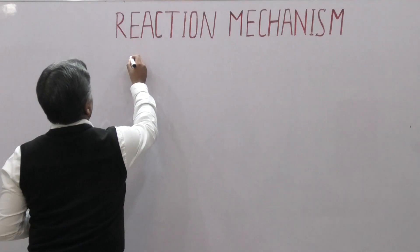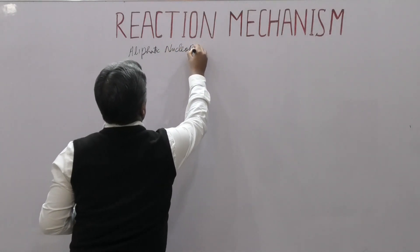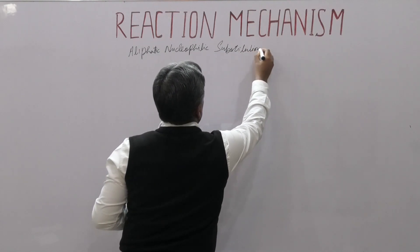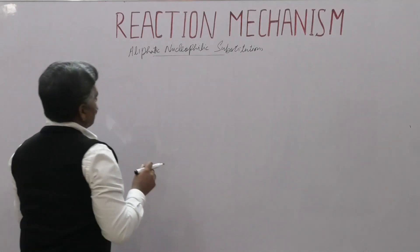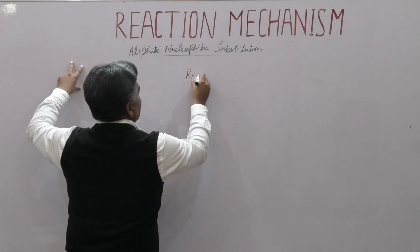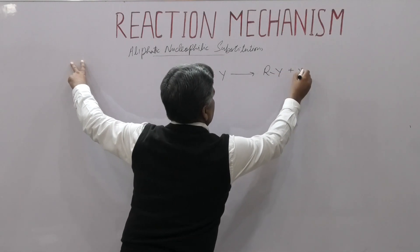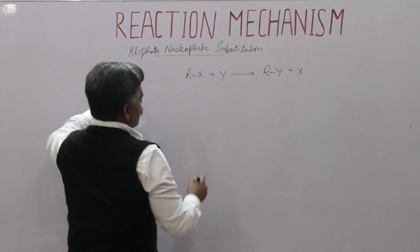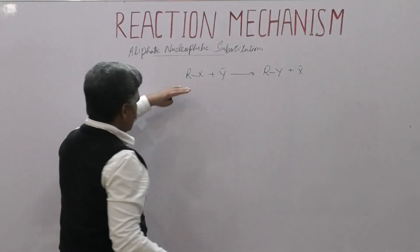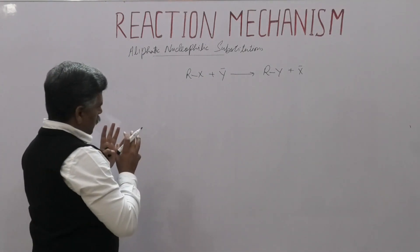When we discuss the general reaction showing nucleophilic substitution, we have: R–X plus Y gives us R–Y plus X. This Y may be negatively charged or it possesses a lone pair. R–X is the substrate, Y is the attacking nucleophile, R–Y is the product, and X is the leaving group.